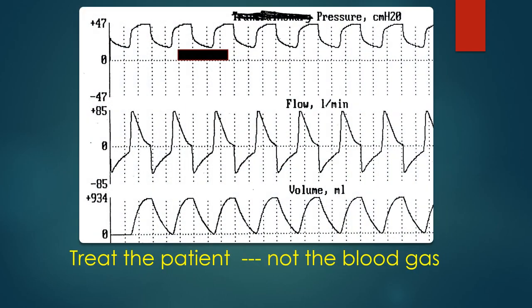Here is an example of what we did before ARDS-NET. The tidal volume shown is 934 mL — way too high; we would never do that today. Back then, our goal for ARDS patients was normalizing blood gas values. We were using tidal volumes of 10 to 15 mL/kg, pressures barely under 50 cm H₂O, and we thought we were doing the right thing.